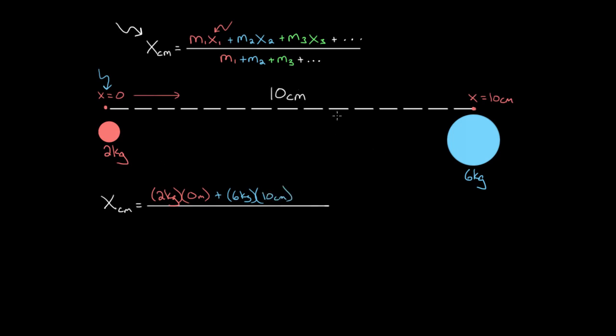And then those are our only two masses, so we stop there, and we just divide by all the masses added together, which is gonna be two kilograms for M one, plus six kilograms for M two. And what we get out of this is two times zero is zero, plus six times 10 is 60 kilogram centimeters, divided by two plus six is gonna be eight kilograms, which gives us 7.5 centimeters.